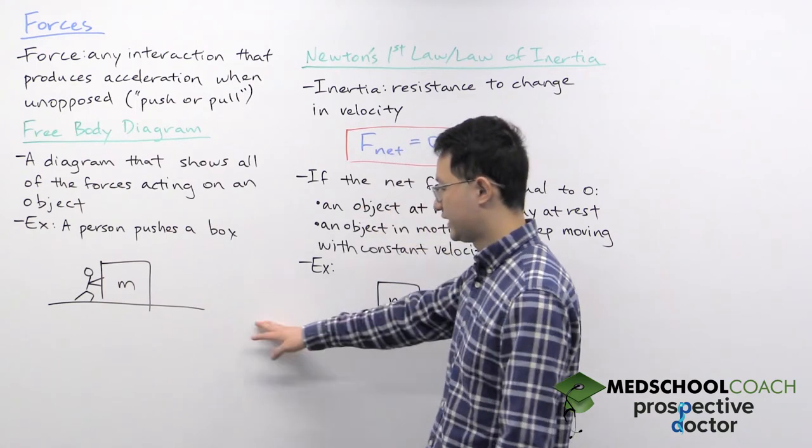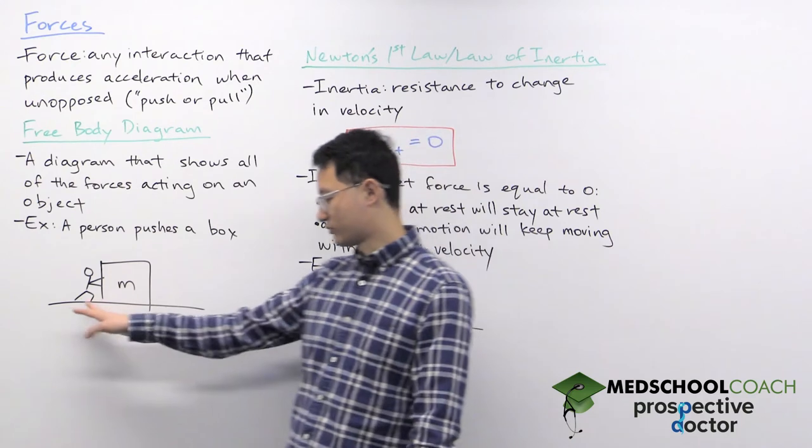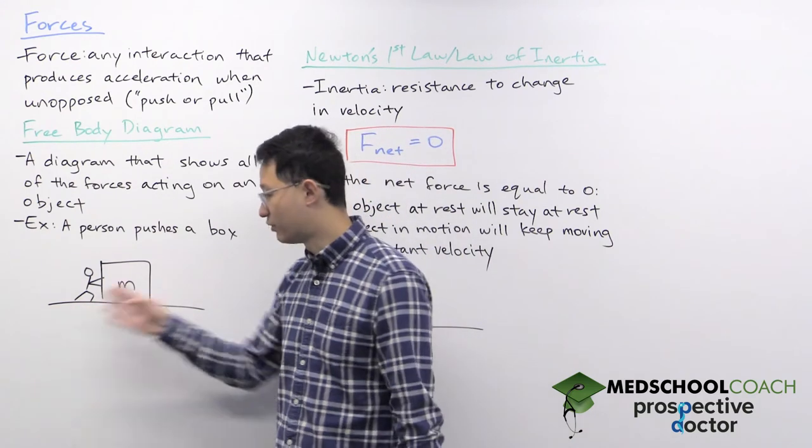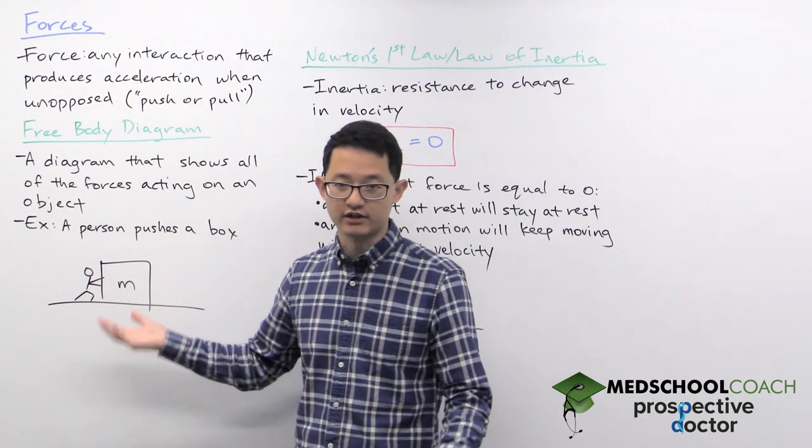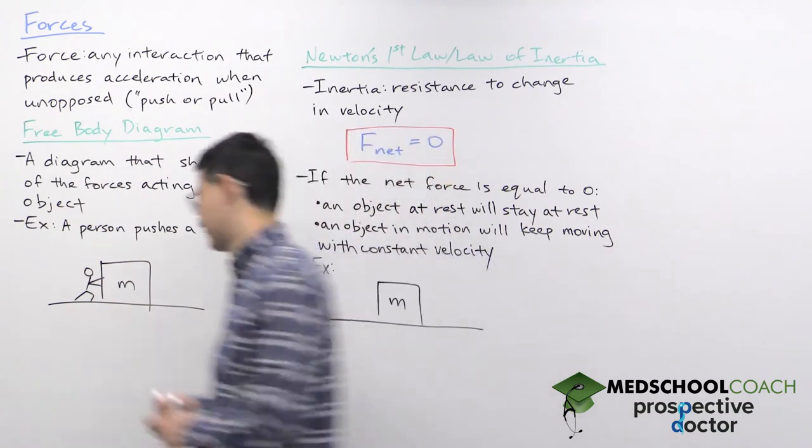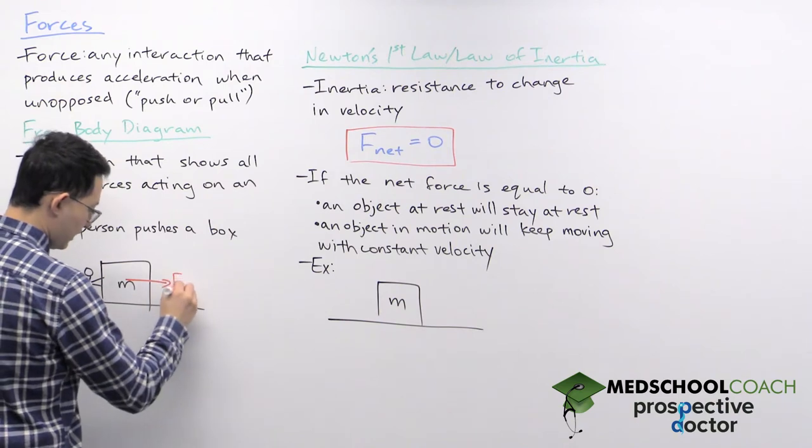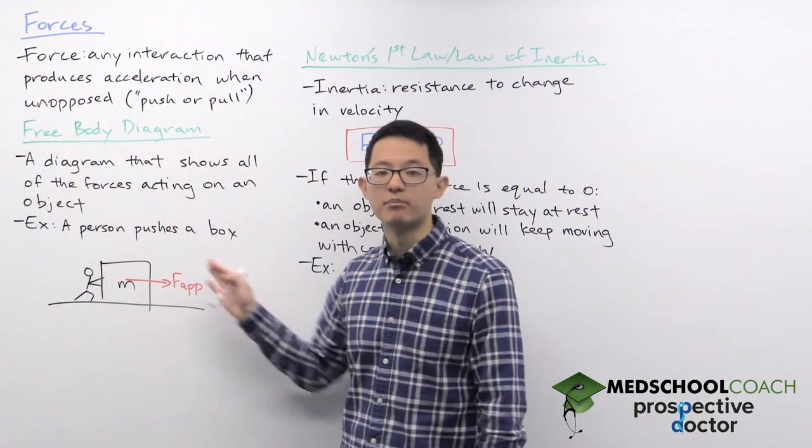So for example, here we have a situation where a person pushes a box. So if you look at the situation, sure, in real life you can see a person pushing a box, but you don't see any forces visibly acting on the box. But we know there are multiple forces in play here. For instance, as the person pushes a box, they are applying their force on the box. We can call this the applied force.